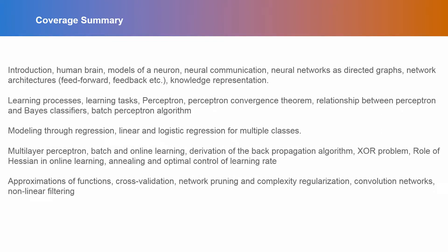Then we moved on to the multilayer perceptron, derived the back propagation algorithm from first principles, and then looked into the XOR problem. We discussed how this can be solved using the multilayer perceptron with a single layer of hidden neurons, as against what we could not do using a simple perceptron. Then we discussed the role of the Hessian in online learning along with annealing in optimal control of the learning rate.